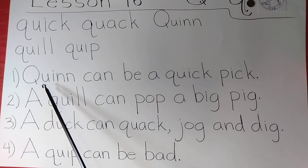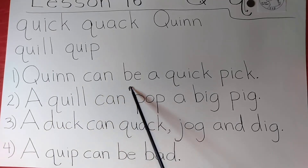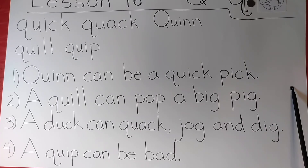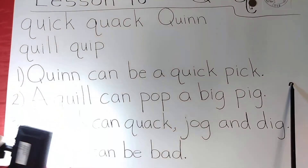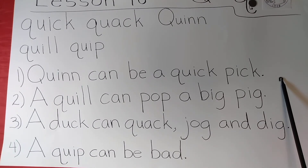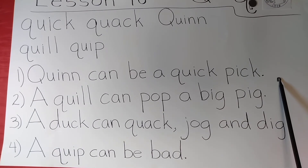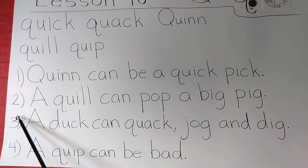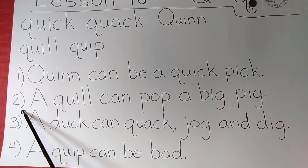My answers: Number one — Quinn can be a quick pick. I would say this could be true, because I can imagine a situation where they're picking teams, Quinn is the best player, so he's going to be the first one to be picked — he could be a quick pick. I don't know if a young student would be able to think of a scenario like that, so you may have a little difficulty explaining that to the student.